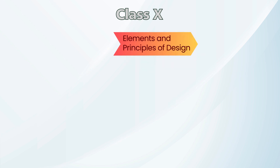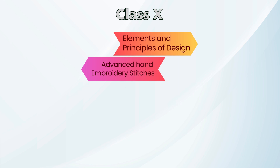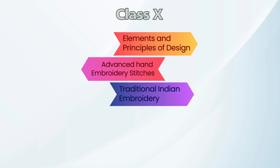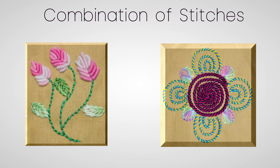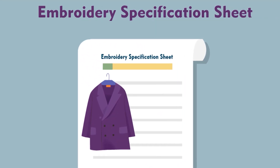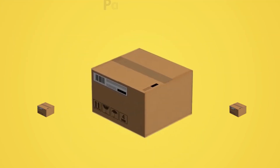The class 10th textbook of this job role explains the elements and principles of design and emphasizes advanced hand embroidery stitches. Various traditional Indian hand embroideries are also included in this textbook. It also explains the combination of different hand embroidery stitches and application of embroidery, including the spec sheet. Finishing and packing of embroidered garments or products, which is an important part of this job role, is also discussed in the course.